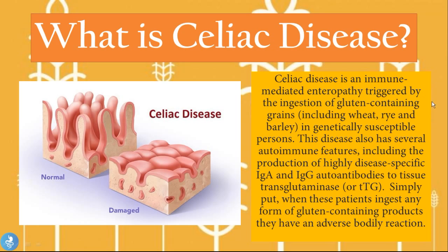From this definition of celiac disease we know that it's an immune mediated enteropathy. Enteropathy means a pathology in the small intestines. Second, the disease is preceded by the patient's ingestion of gluten containing products, and when these patients ingest gluten containing products such as wheat, rye, and barley, their immune system fires out IgG and IgA antibodies that actually target the small intestine.